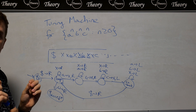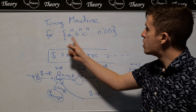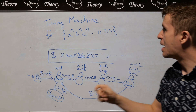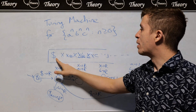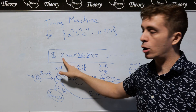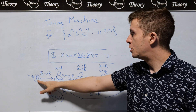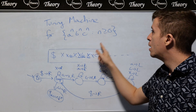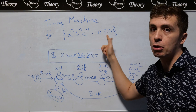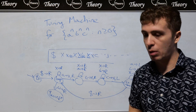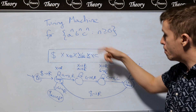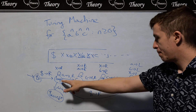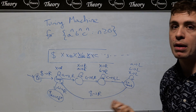Let's consider the edge cases. If we have empty input, in this model we have a dollar sign followed immediately by a blank. So Q0 sees the dollar sign, moves right, sees a blank, and goes to the accept state — which is correct because N is at least zero, so the empty string is valid. If we have N greater than zero, there will be some A's, B's, and C's, and we'll take the loop transition and go around as discussed.